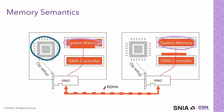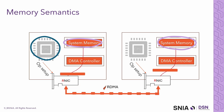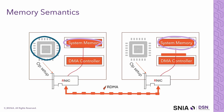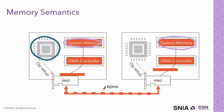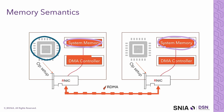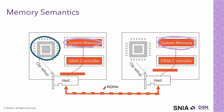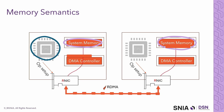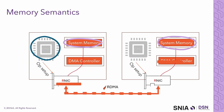Huge amounts of data can be transferred this way. One important note: RNICs can also deliver memory directly from GPU memory, bypassing host memory. This is referred to as GPU Direct. For the sake of this session, however, we'll use system memory for clarity.